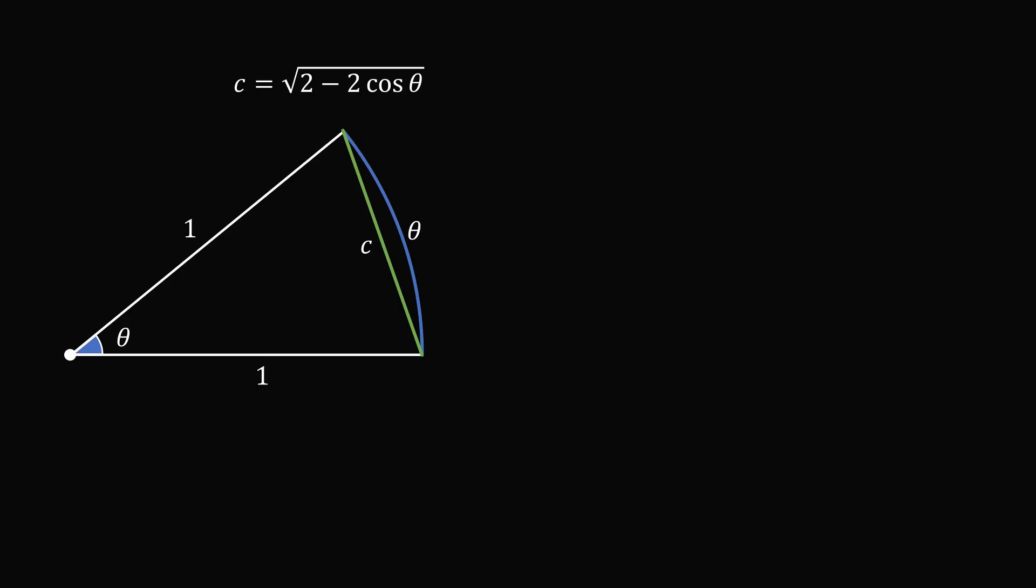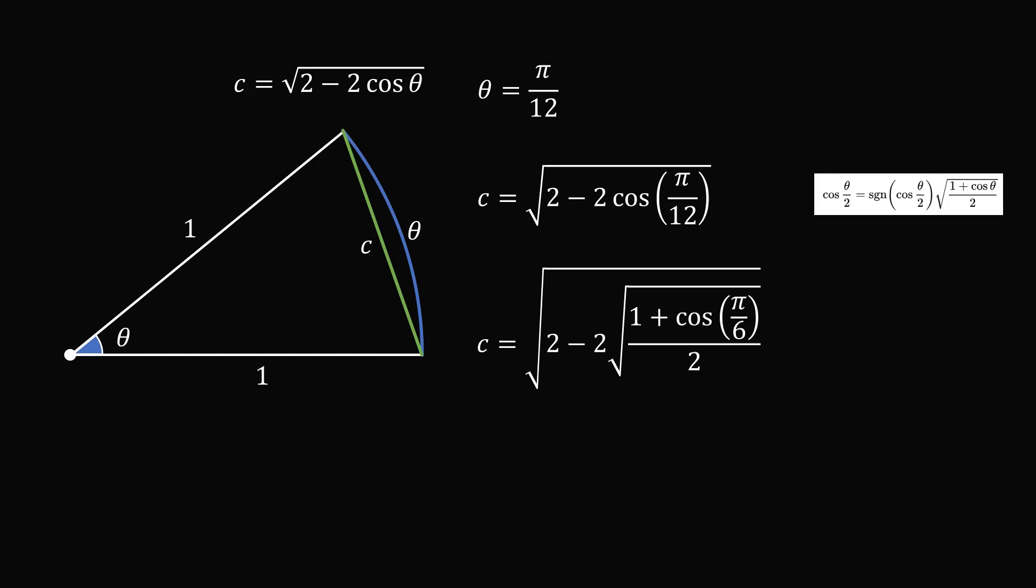So now let's get to the original question. Let's suppose that theta is equal to pi over 12. We can substitute in for the formula for c. Now we have cosine of pi over 12. We can simplify this by using the half angle identity. So here, theta over 2 is equal to pi over 12, and theta is equal to pi over 6. We know what cosine of pi over 6 is equal to, so we can solve for this. The sine of the cosine of pi over 12 will be positive, so we know the square root will be positive. So we substitute into the formula. We will get the square root of 1 plus cosine of pi over 6 all over 2. Cosine of pi over 6 is equal to square root of 3 over 2. And all that remains is to do a little bit of simplification. And we get that c is equal to the square root of 2 minus the square root of 2 plus root 3.